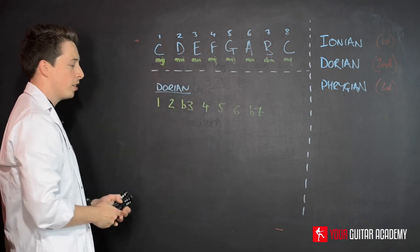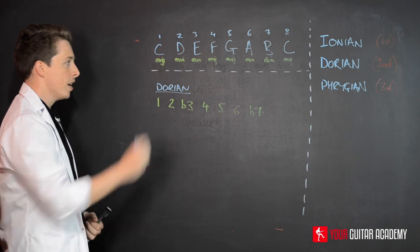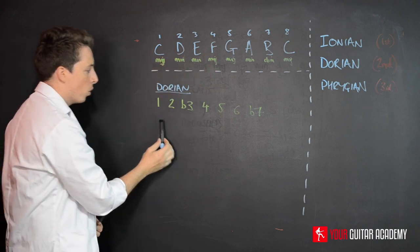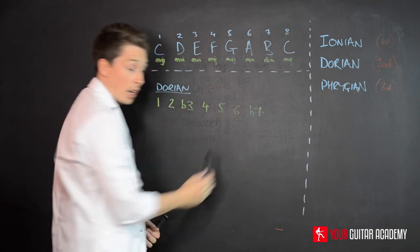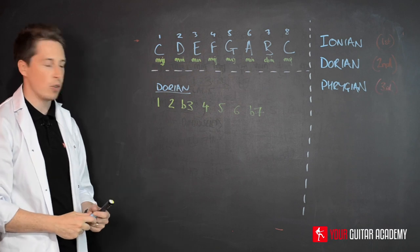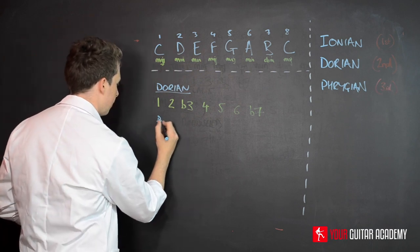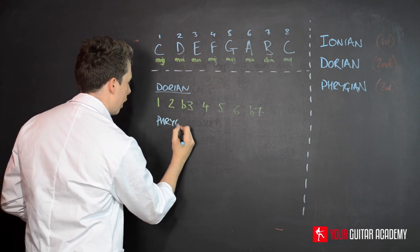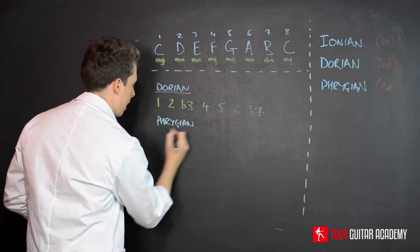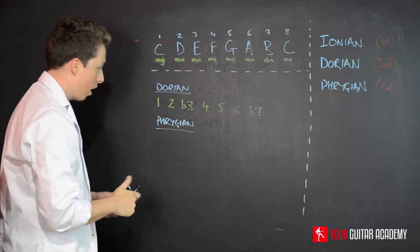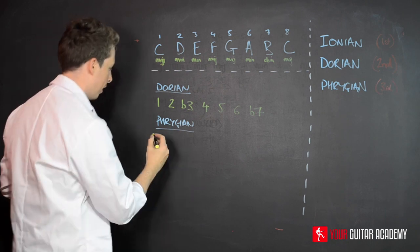Now we're going to add this second half to this, so that's the basic idea. We're also going to learn the actual scale formula for Phrygian. So let's write Phrygian here, and here's the formula for the scale.